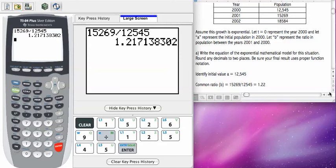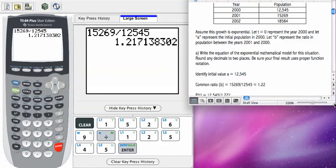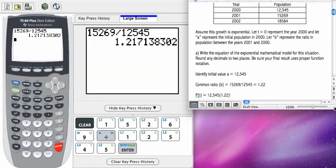Once we have our B value, we need to plug the A and B into our equation of exponential form. We're going to write it as a function, since it represents population over time, P of T equals 12,545 times 1.22 to the T power. So there's our exponential model.